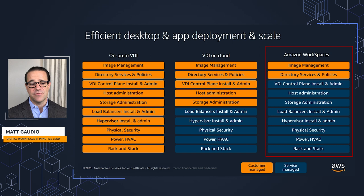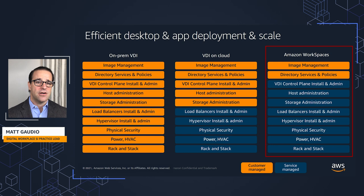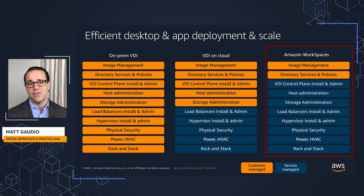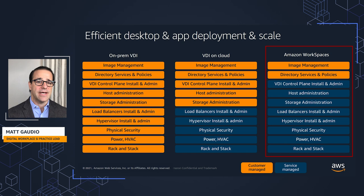The on-premises VDI scenario involves a very large hardware component. We need to procure it, configure it, find a physical place for it, and — critically — scale it to cover our peak demand. For example, if I've got 1,000 employees in a contact center and I'm a retailer who sees a huge uptick around the holidays requiring 2,000 users, I have to have enough hardware to support 2,000 users even though I may only consume that for a month or two. The other 10 months, that's just idle hardware sitting in my data center.